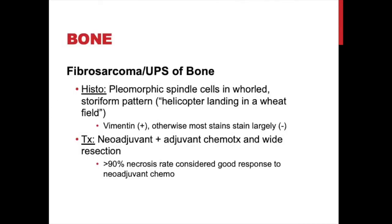On histology you'll see pleomorphic spindle cells in a storiform pattern — also described as a helicopter landing in a wheat field for undifferentiated pleomorphic sarcoma of bone. Fibrosarcoma is slightly more organized with a herringbone pattern. These are vimentin positive but otherwise largely negative on immunohistochemical staining. Treatment is similar to conventional osteosarcoma with neoadjuvant and adjuvant chemotherapy centered around surgical resection; greater than 90% necrosis is considered a good chemotherapy response. However, some studies now suggest less benefit from chemotherapy, so there may be a paradigm shift toward surgical resection alone.